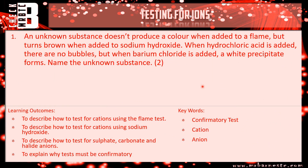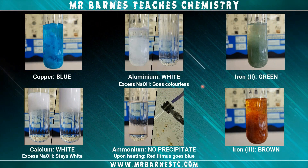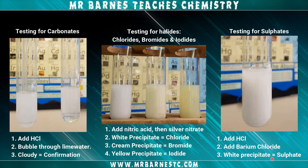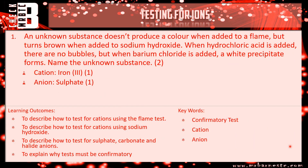Question 1: an unknown substance doesn't produce a colour in a flame but turns brown when added to sodium hydroxide. We're looking for the sodium hydroxide test here. Which ion gave a brown precipitate? That's iron 3. So your first mark is for saying the cation is iron 3. When barium chloride is added a white precipitate forms — that's our sulphate, proving we had a sulphate present. Therefore the anion is sulphate and the unknown substance is iron 3 sulphate. You need that '3' in there for the iron to get both marks.